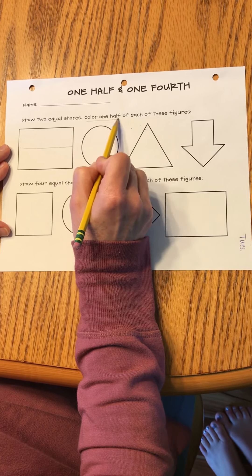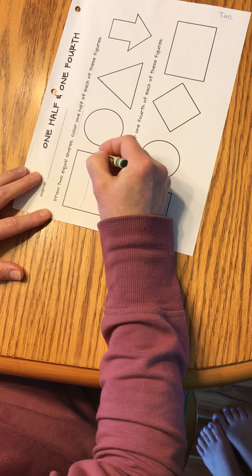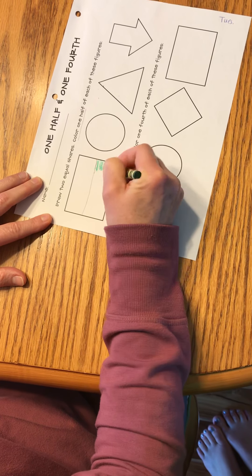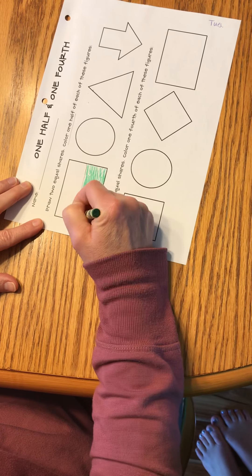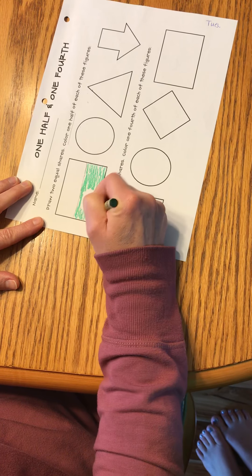But then we have to do the second part. Color one half. So I'm going to take my crayon and this time I'm going to choose to color the bottom. I'm just going to do it kind of quickly because it's not an art project. It's a math activity.